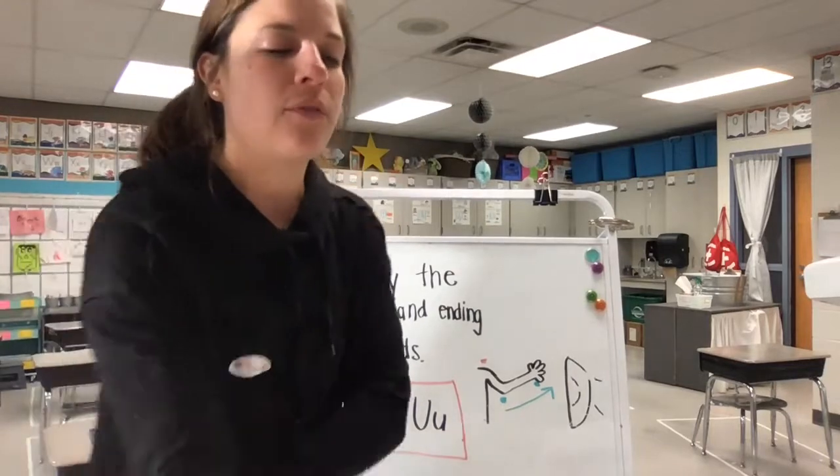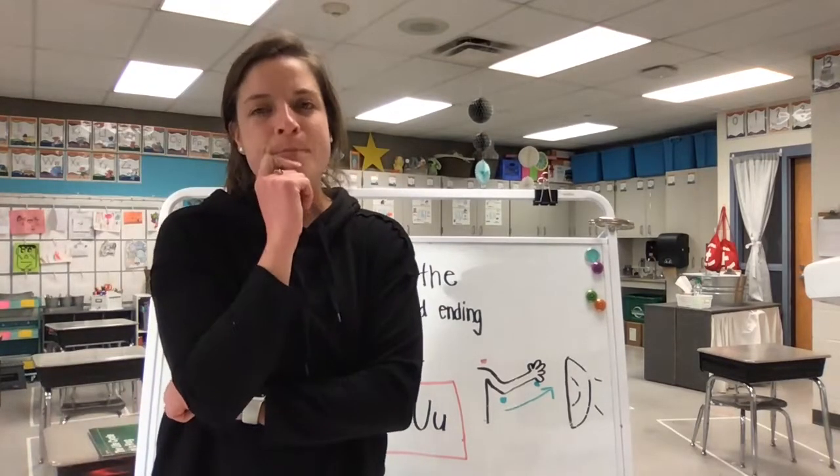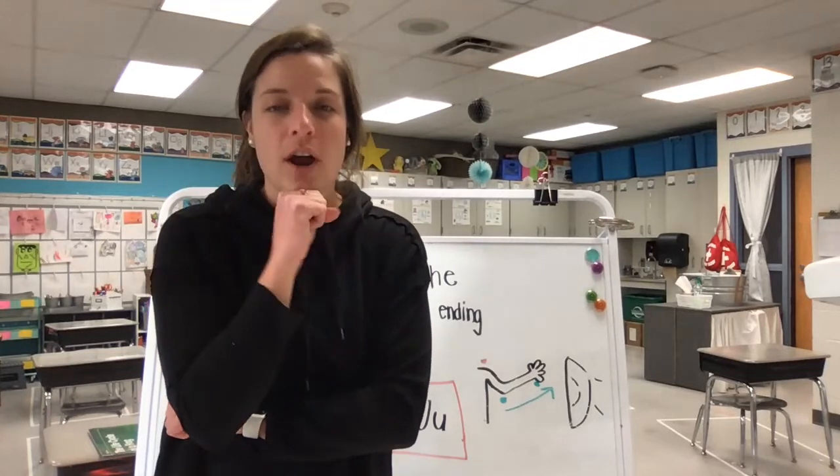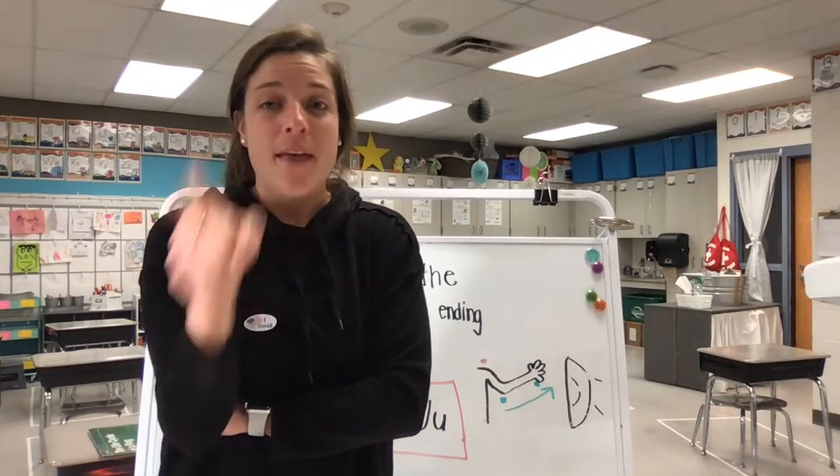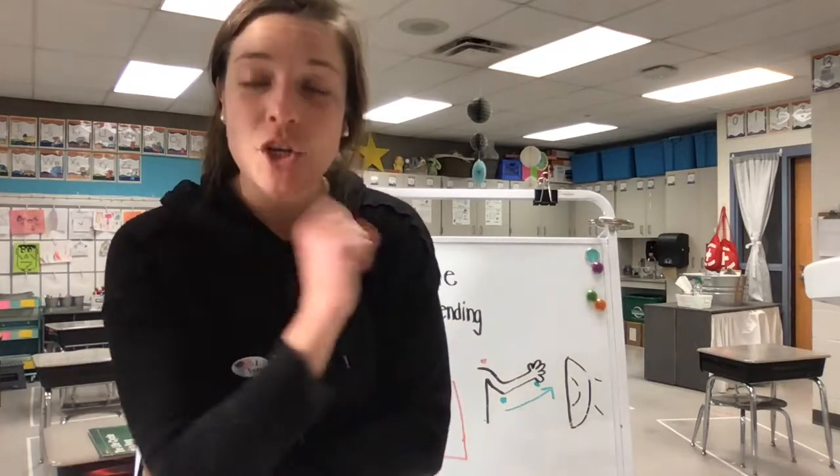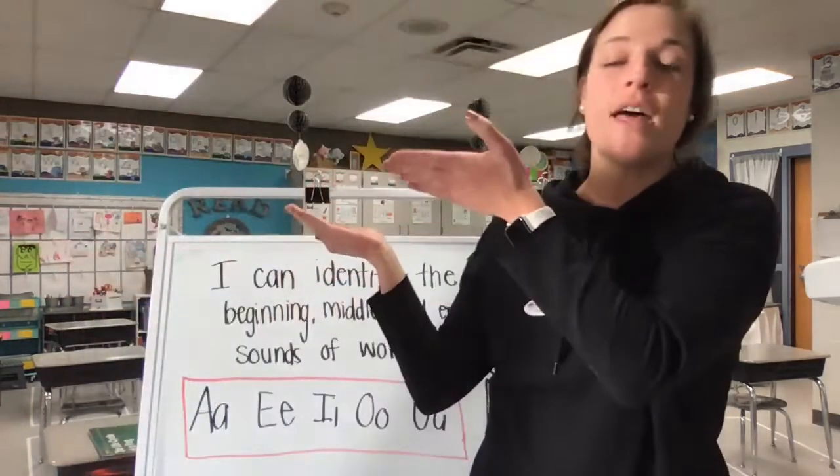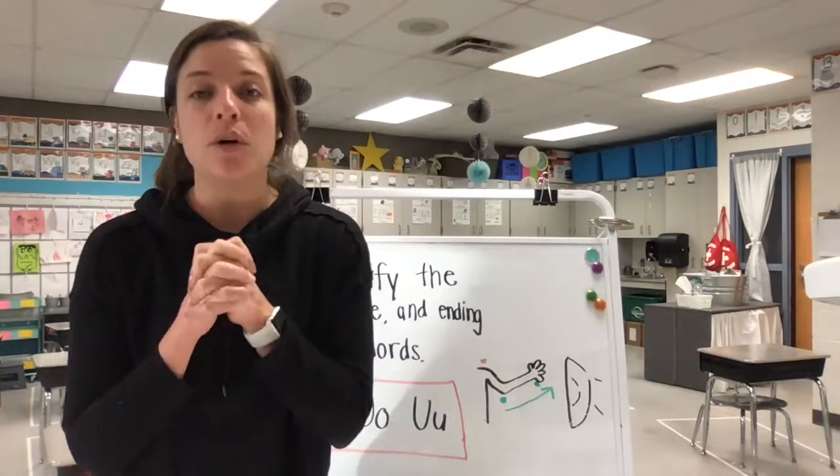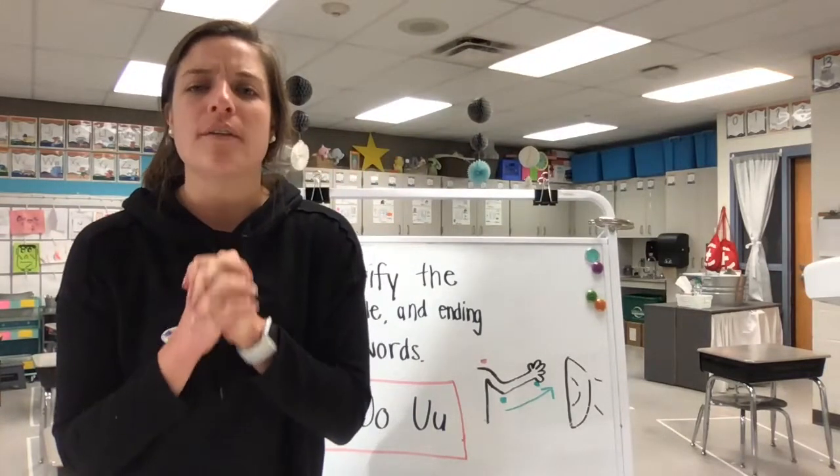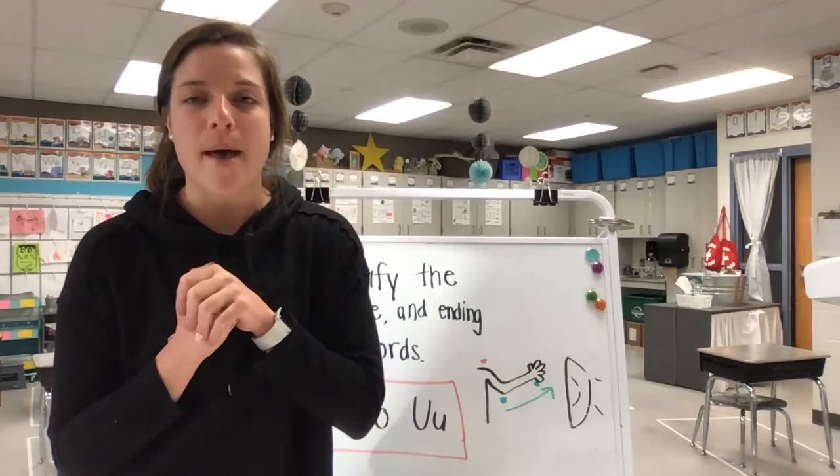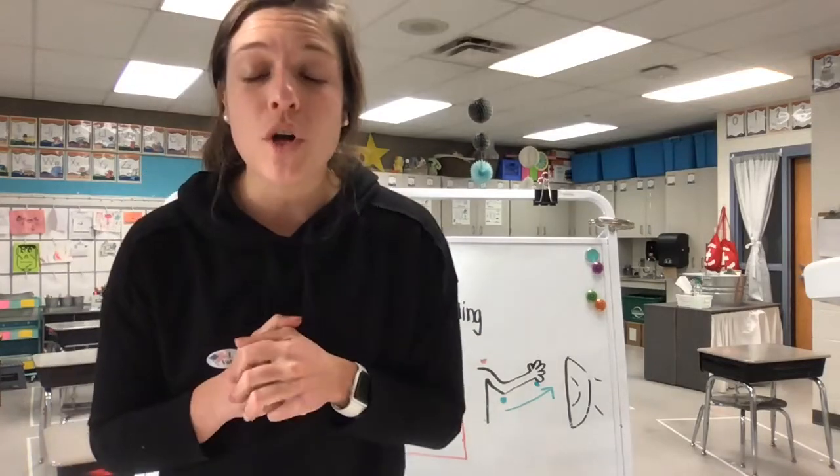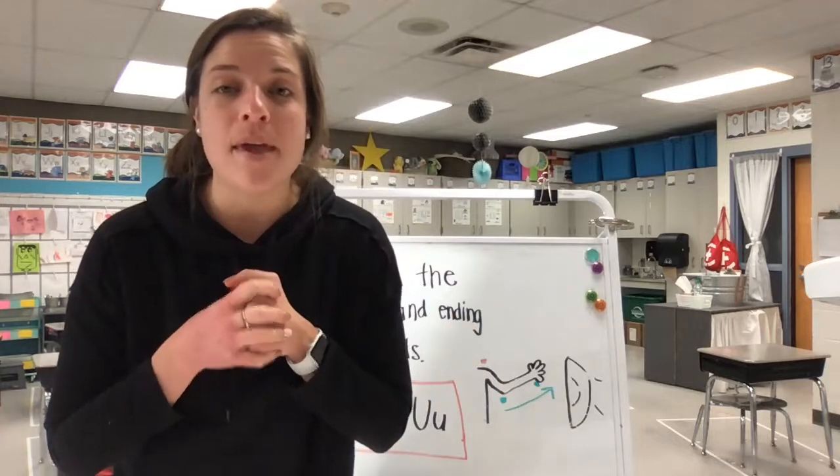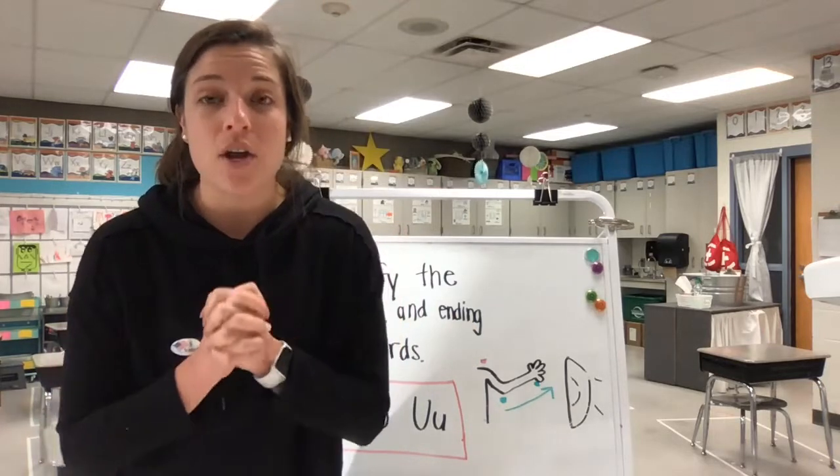First of all let's think for a second. Put on your thinking cap. How many letters are in our alphabet? If you said 26, kiss your brain. There are 26 letters in our alphabet. Five of those letters are special letters. What do we call those five special letters in our alphabet? Those are called vowels. Can you say that word with me? Vowels. Very good.